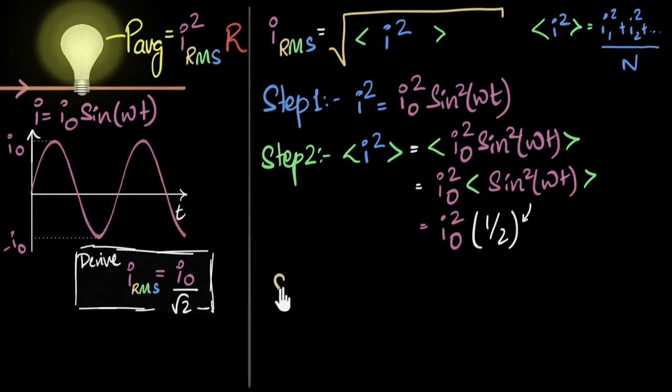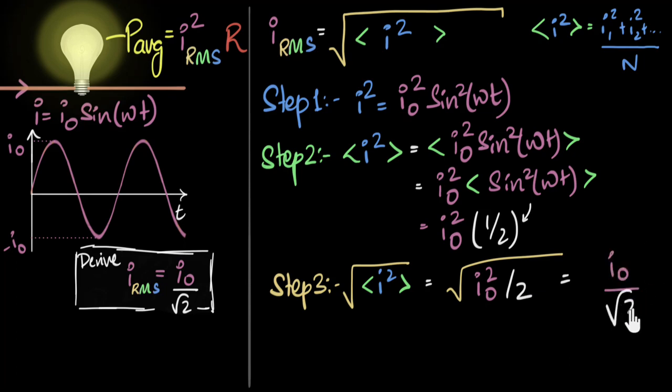And now, step three, we can take the square root. Square root of the average or the mean of the square of the current. So that's gonna be the square root of I₀² by two. And what does that equal? That equals I₀ divided by root two. So we have proved that for sinusoids, the RMS value equals the peak value divided by root two.